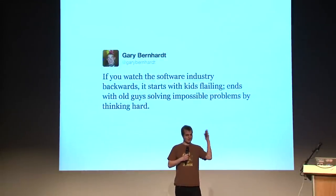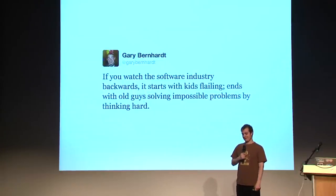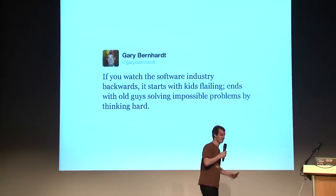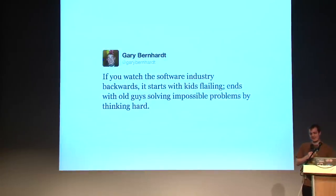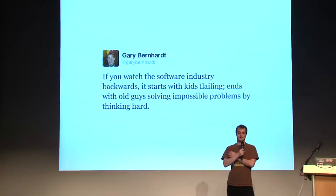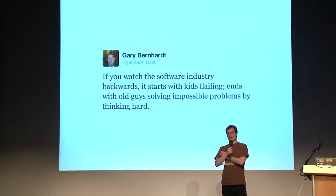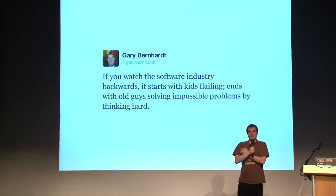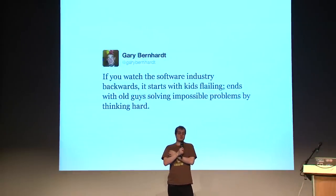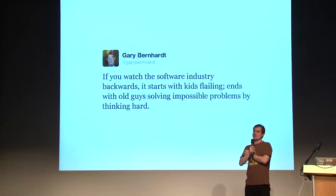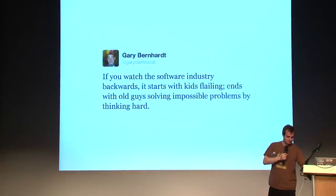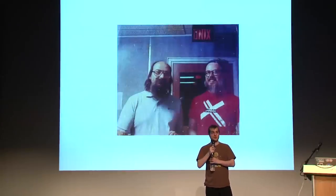So let's go back in time a bit and see how things used to be. I really like this quote: 'If you watch the software industry backwards, it starts with kids flailing, ends with old guys solving impossible problems by thinking hard.' Which is maybe a bit exaggerated, but I think there is some truth to this — there hasn't been that much progress in computer science in the last 30 or 40 years. Pretty much all of the new things that came up weren't actually that new. A lot of things were invented in the 70s and 80s.